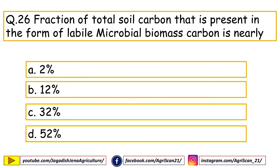Next question: out of total soil organic carbon, what percentage is found as microbial biomass carbon? Options are 2%, 12%, 32%, 52%. The right answer is 2%.